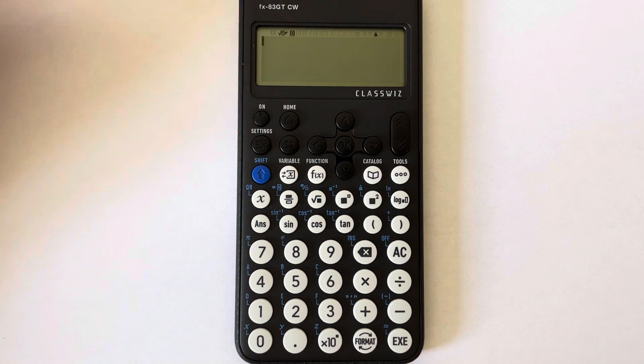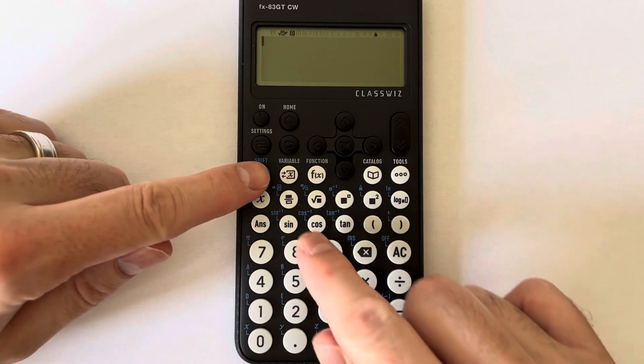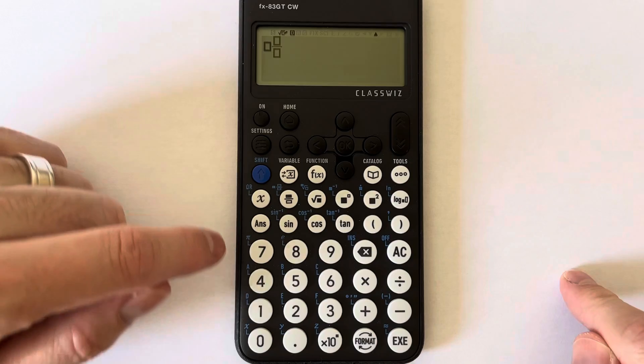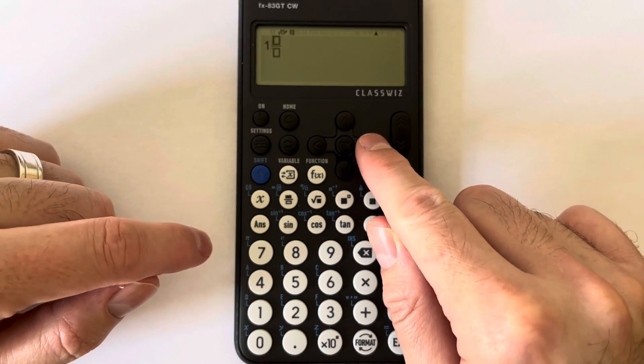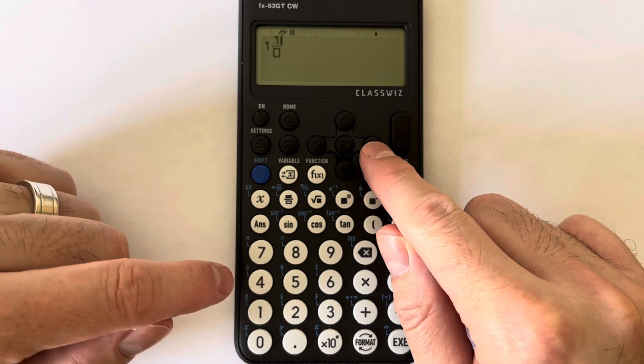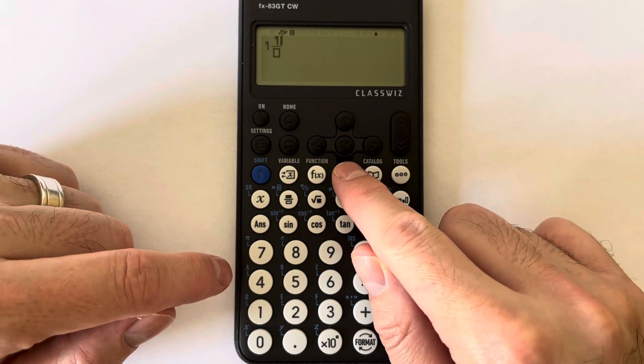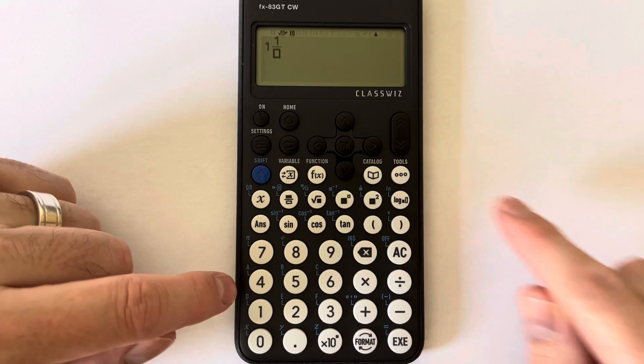So if you press shift fraction key, press the one, move that to the right, press the one there. So just got to get it on the denominator now.